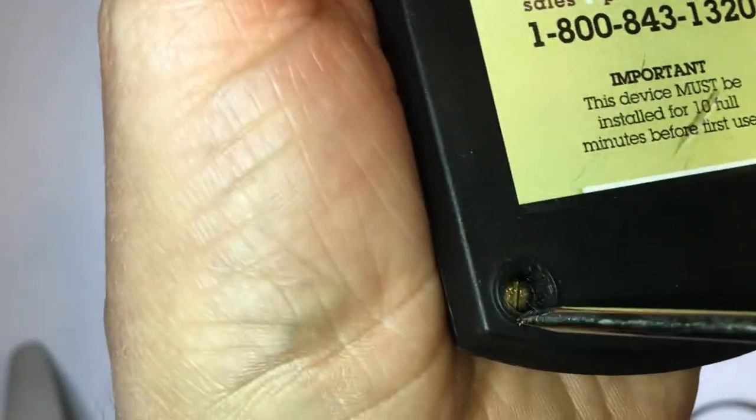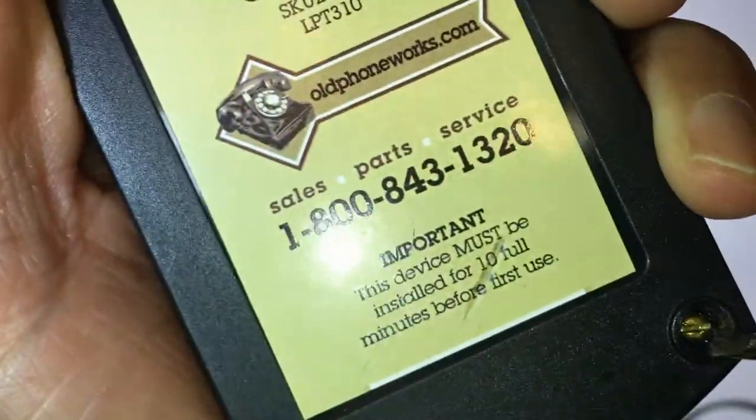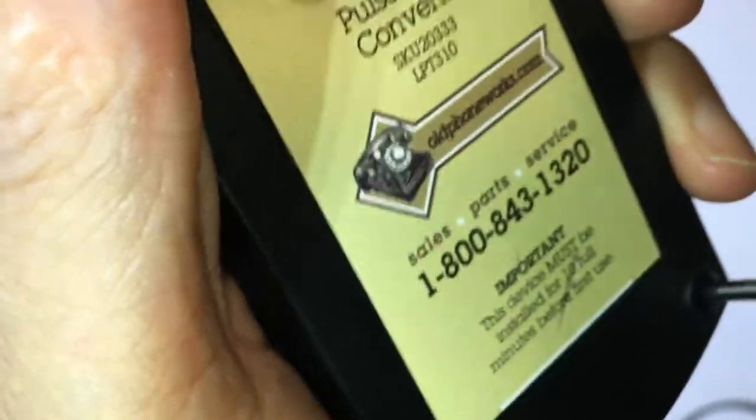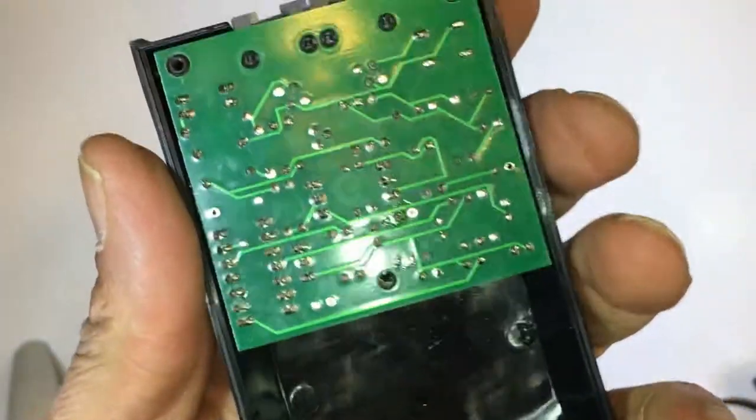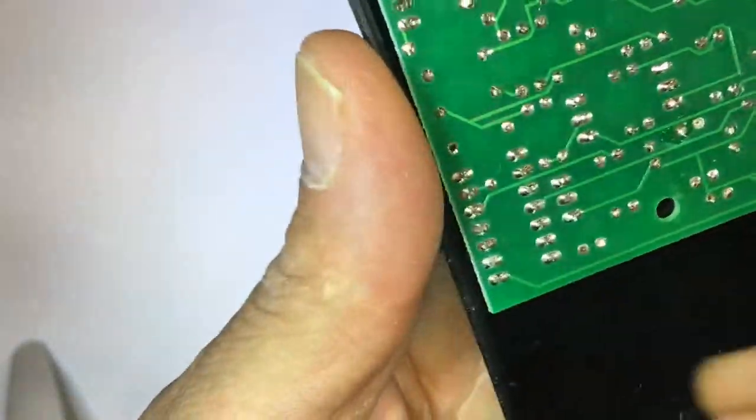So I became curious to see what it looks like inside. I figured I'd share it with you guys so that you don't have to open up yours and avoid the warranty, and you can see what's inside this box with me. Four flathead screws, and this is the board.